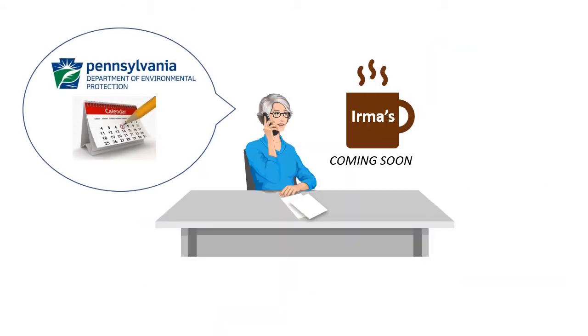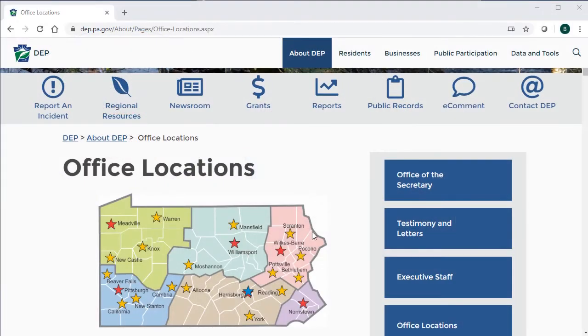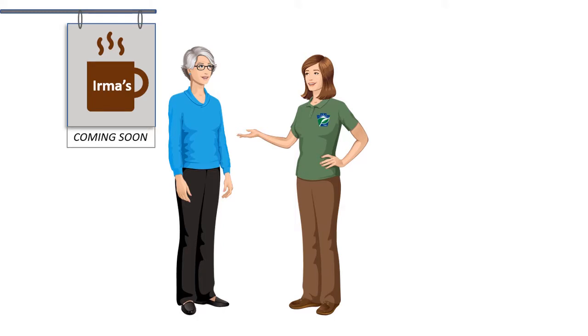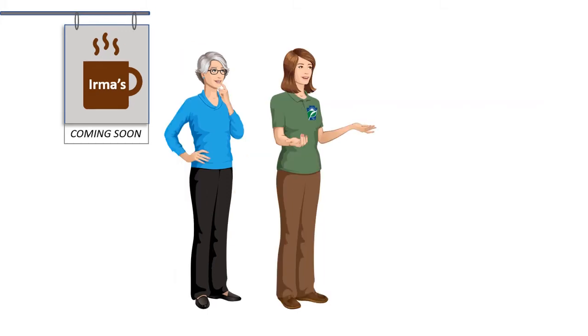First, the applicant should contact their local Safe Drinking Water Program and schedule a pre-application meeting. If you do not know your local contact, you can use the DEP website Office Locations link in the video description. During the pre-application meeting, the applicant will have the ability to ask DEP questions about the approval process for a water supply well and DEP staff can provide a comprehensive overview of the process. In addition, the applicant can schedule a site survey with DEP staff to discuss ideal locations for where to drill the water supply well.